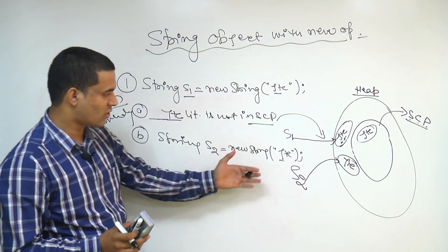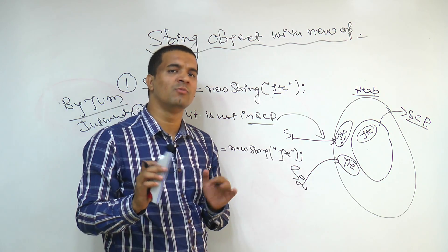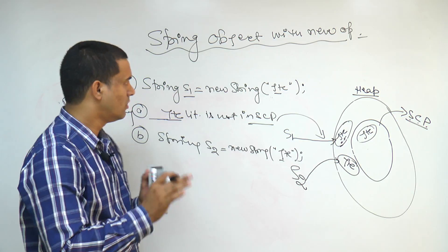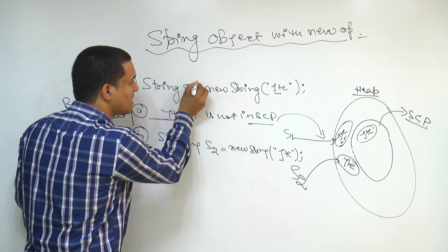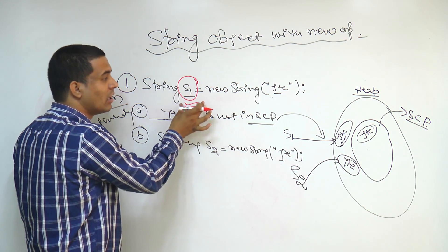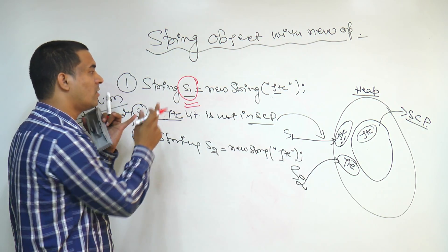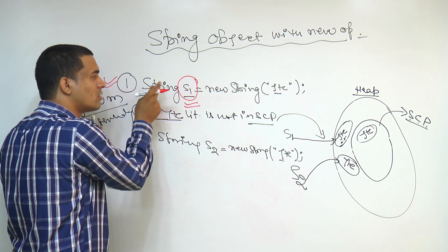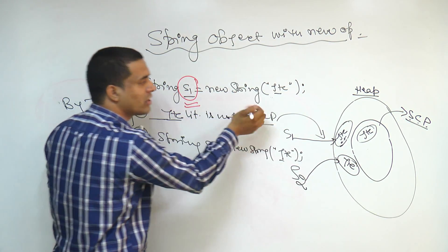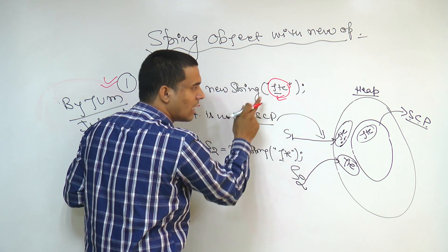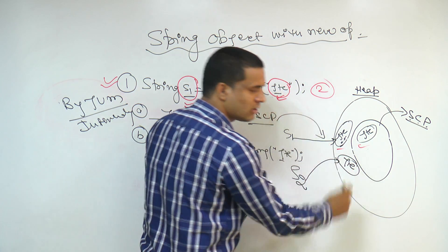We have seen how string objects are created. Some questions are frequently asked in interviews. The question is: for the S1 reference, how many objects will be created at this point? If it is your first statement and you have not used any string literal before, then two objects are created — one inside the pool and one outside the pool.